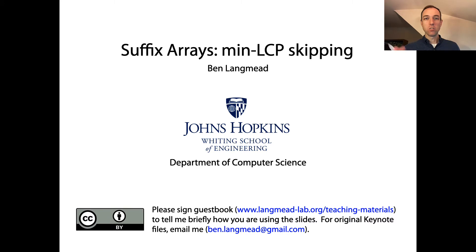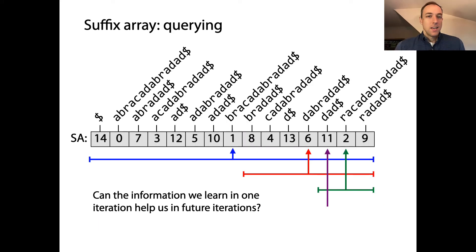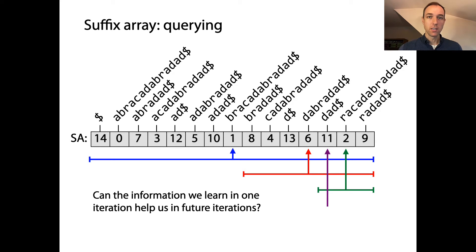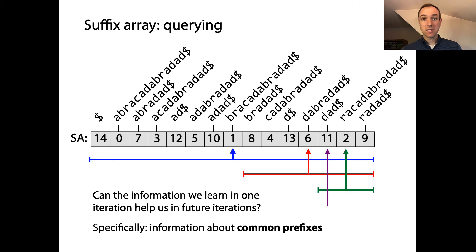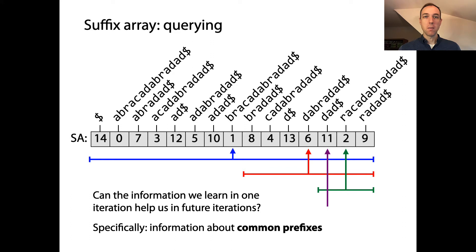The simple one introduces an important concept: the longest common prefix. The first question we want to ask is: can we somehow, over the course of doing this binary search, take some of the information that we've learned so far and use it to help us do less work — to help us skip work in future iterations of the binary search? Specifically, can we take information about common prefixes observed between the query and the suffixes, and roll that information forward to skip some future work?